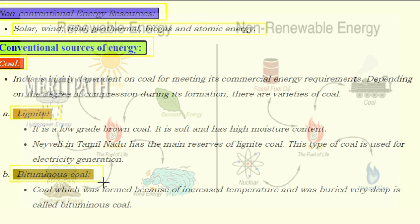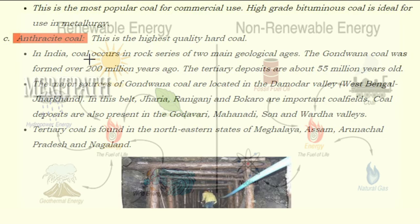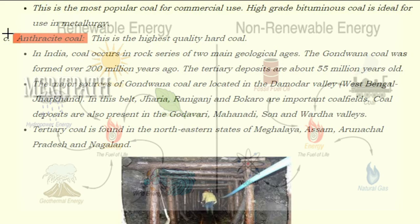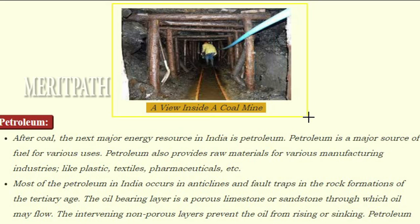Bituminous coal is formed because of increased temperature and deep burial; it is the most popular coal for commercial use, and high-grade bituminous coal is ideal for metallurgy. Anthracite is the highest quality hard coal. In India, coal occurs in rock series of two main geological ages: Gondwana coal formed over 200 million years ago, and tertiary deposits about 55 million years old. Major Gondwana coal sources are in the Damodar Valley — Jharia, Raniganj, and Bokaro are important coalfields. Tertiary coal is found in the northeastern states of Meghalaya, Assam, Arunachal Pradesh, and Nagaland.